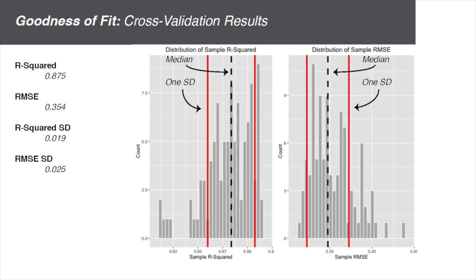I was able to test the model using out-of-sample cross-validation. The low values for R-squared and RMSE standard deviations mean that I was able to get consistent results and that the model is not overfit to the data it's trained on.